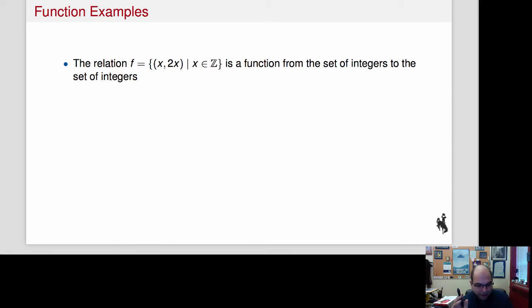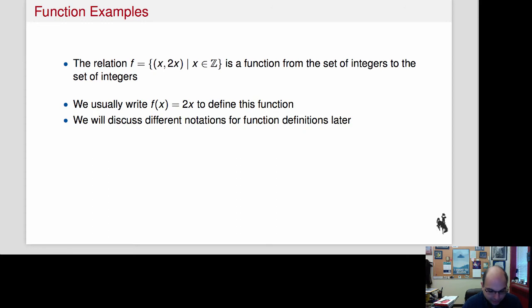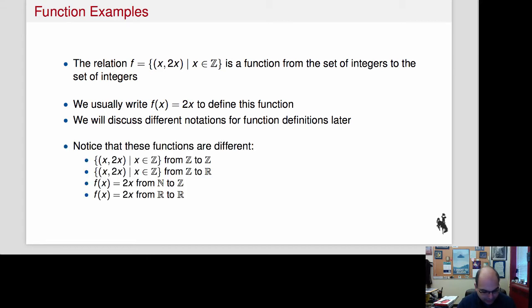Here's another function. And this one is written using the set notation for relations: f = {(x, 2x) | x ∈ Z}. And that actually is a function from the set of integers to the set of integers. Normally, you would write this function instead of using that clunky notation—you would just say f(x) = 2x. We'll talk about different ways of defining functions later.